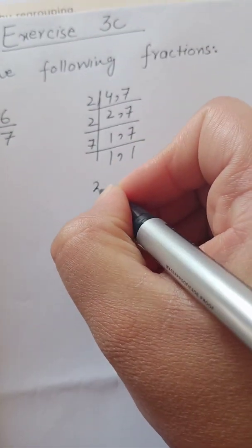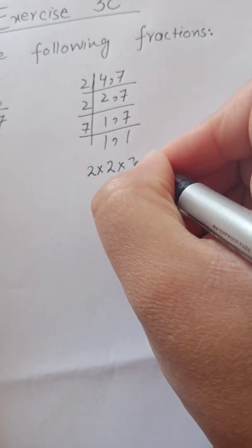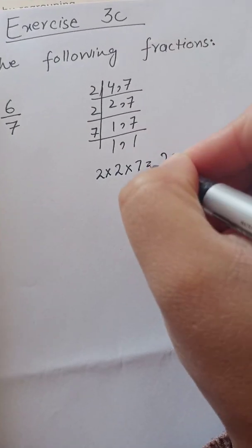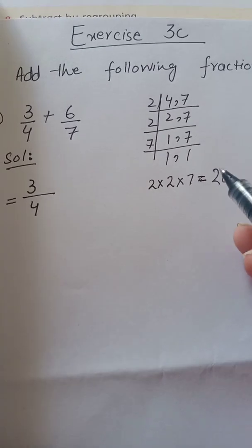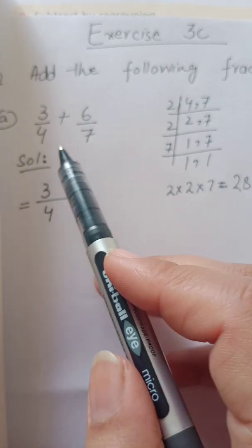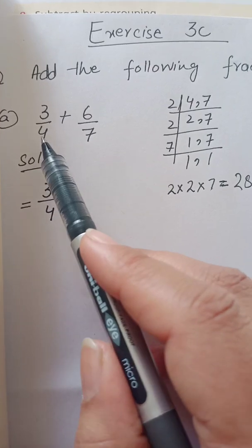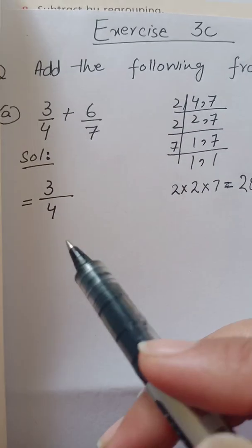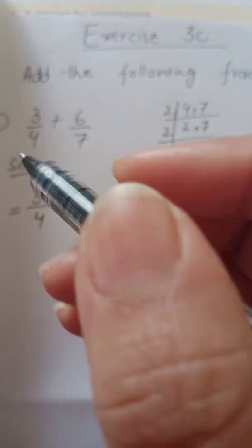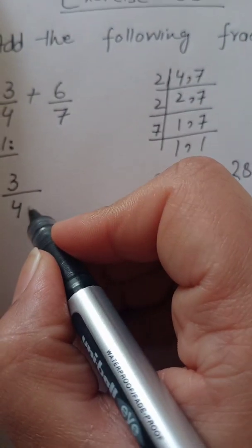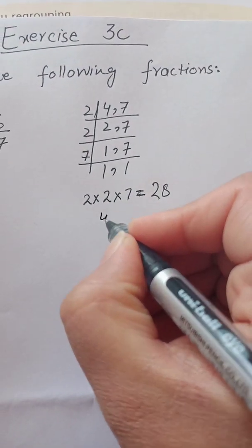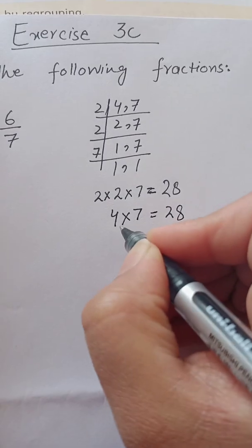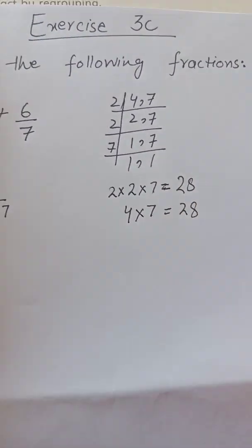LCM lenge toh factors likhte hain: two, two — so four; aur four sevens are 28. Ab pata chal gaya: aisa kaunsa number hai jo dono ke denominator mein banayenge — 28. Toh four ko bhi 28 banana hai, seven ko bhi 28 banana hai. Three by four mein: four ko seven se multiply karein toh 28 aayega — two twos are four, multiply by seven gives 28. Four ko seven se karenge, seven ko four se karenge — dono 28 denge.